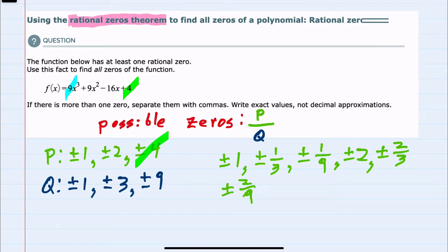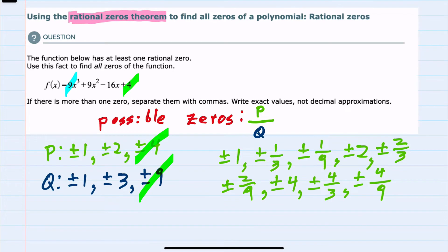And then for 4, plus or minus 4 over 1, which is just plus or minus 4, plus or minus 4 over 3, and plus or minus 4 over 9. So we have a pretty extensive list of possible zeros.